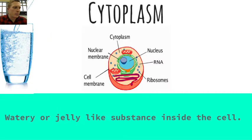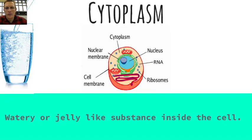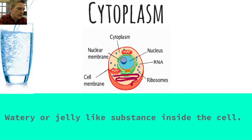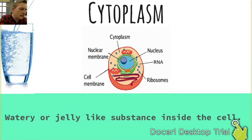The cytoplasm is the watery substance that's inside the cell, sometimes referred to as a jelly-like substance. Another way to remember it: it's everything inside the cell membrane between the cell membrane and the nucleus — all of this fluid that makes up the inside of the cell.